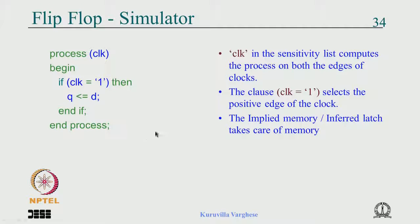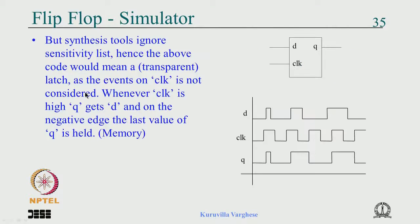As far as the synthesis tool is concerned, we have to bring the event part into the code, because that is what is missing. So we add the attribute clock'event and clock is equal to 1, which represents a rising edge. Then Q gets D, end if. As far as the simulator is concerned, there is some redundancy — it starts computing whenever there is an event.